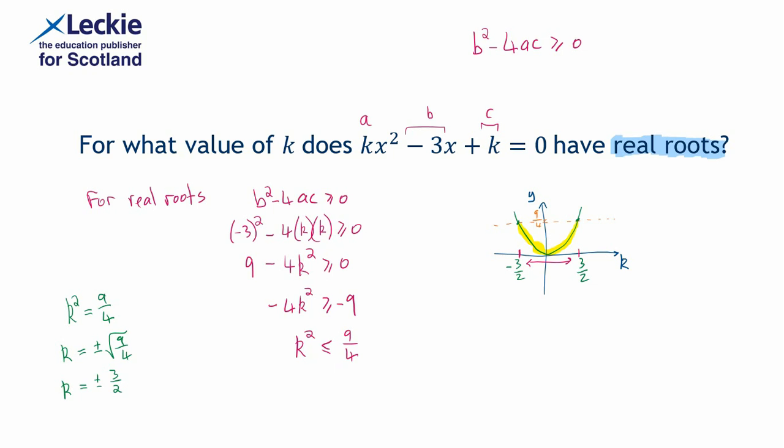So how do we write our answer finally? Finally, we want to write it using inequality notation, and that means negative 3 over 2 is less than or equal to k, which is again less than or equal to positive 3 over 2. So that gives us all the k values in between and including negative 3 over 2 and 3 over 2. And if k was any of those numbers in that range, then if we put it into these spaces in the equation, we would have a quadratic with real roots.